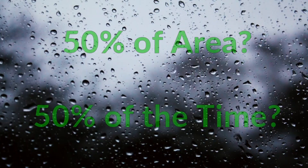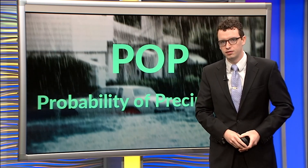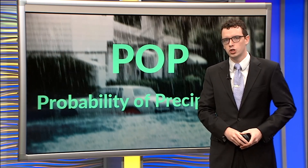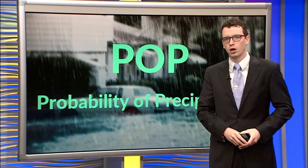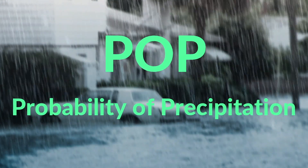How do you understand a forecast that expects cloudy skies and about a 50% chance of rain? Does it mean half of the area will see rain, or it will rain half of the day? As it turns out, neither of those are right. The probability of precipitation — POP, or chance of rain — has been used in public forecasts for over 50 years, yet studies show that many are still confused about what it actually means.